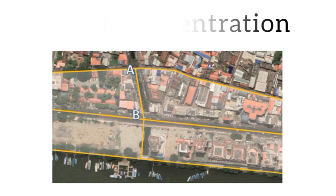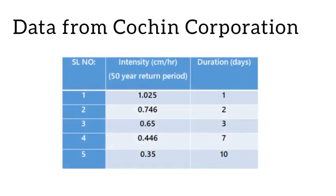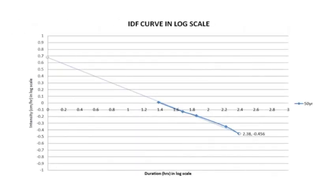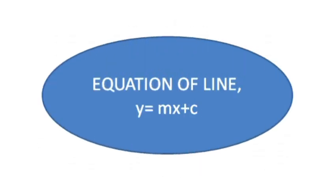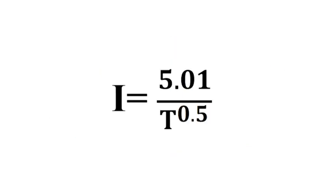In order to find out the rainfall intensity, the IDF curve was needed. From the rainfall data obtained from Cochin Corporation, the IDF curve was plotted in log scale. I, Amina Rafiq, formulated an equation for calculating rainfall intensity from the IDF curve. Based on the concept of equation of a line, the equation connecting rainfall intensity and time of concentration was found. One of the important practical applications of our project is this equation.